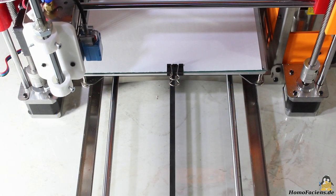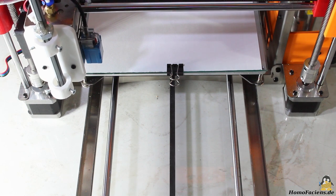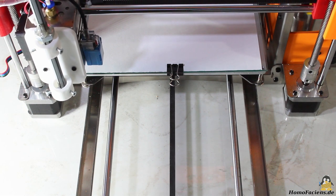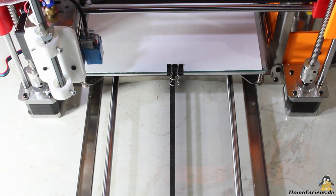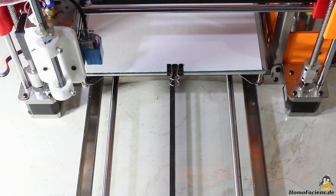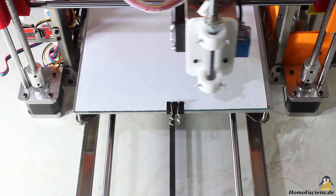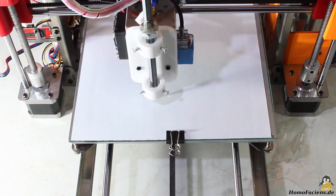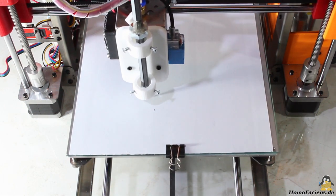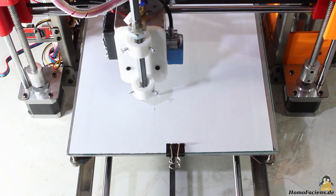In contrast to 3D printing, only few parameters have to be adjusted for plotting. First, there is the vertical movement of the pen. In high position, no lines should be drawn, while in low position, the tip of the pen must touch the surface reliably during movement.